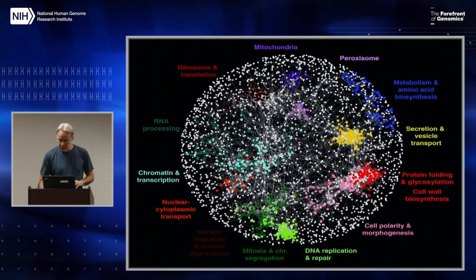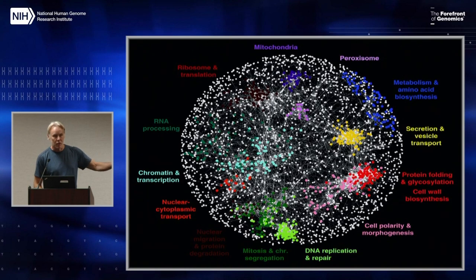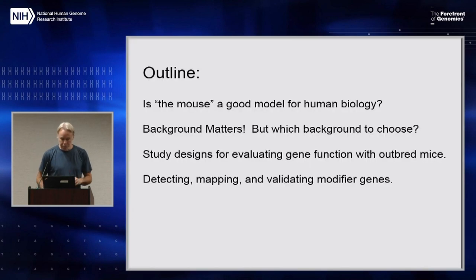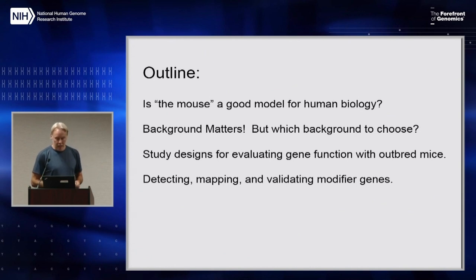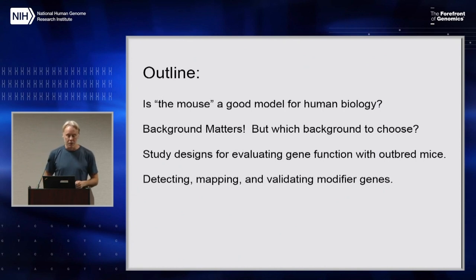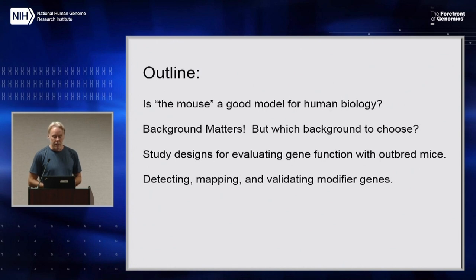So just hold that thought — we're not going to propose to knock out all the genes in the mouse two at a time; that's clearly impossible. But here's what I do want to talk about: is the mouse a good model for human biology? I'm just going to say mostly yes. I'd also like to make the point that the genetic background matters.